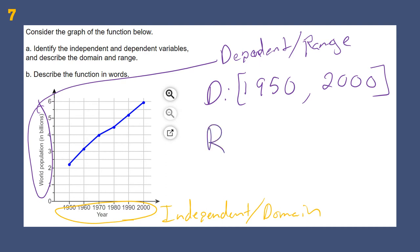For the range, we look at the Y-axis and find the bottom and top values. It looks like it's about 2.2 billion at the bottom and goes up to about 6 billion.